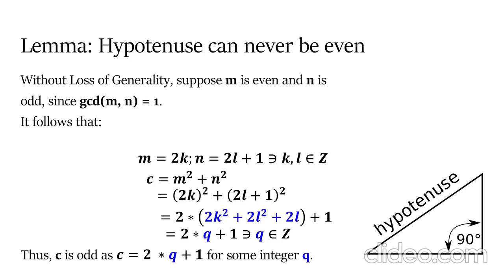Now, by previous formulation, c is equal to m squared plus n squared. After substituting the values for m and n and factoring, we have c is equal to 2 times 2k squared plus 2l squared plus 2l.